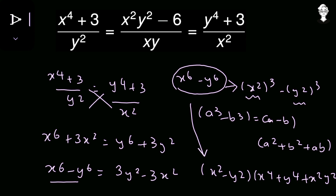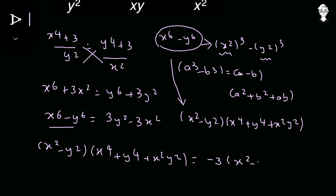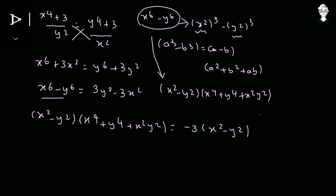Replacing this in the equation: (x² minus y²)(x⁴ plus y⁴ plus x²y²) equals 3y² minus 3x². Taking negative 3 as common on the right side gives negative 3 times (x² minus y²). We observe that x² minus y² appears on both sides. However, we cannot cancel it if it equals zero, so we first assume x² minus y² is not equal to zero and proceed.